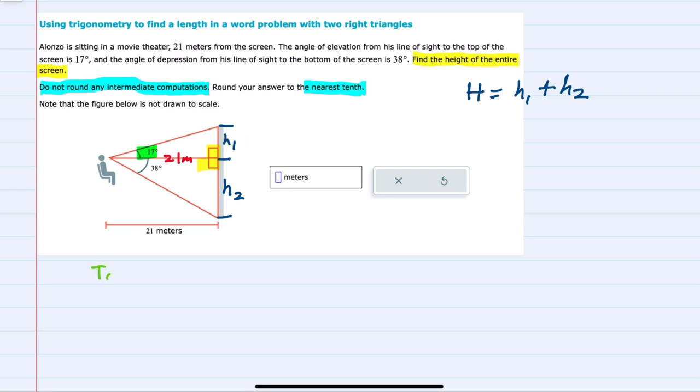I can say that the tangent of 17 degrees in this triangle is equal to the opposite side, which is our h1, over the adjacent side, which is our 21 meters.